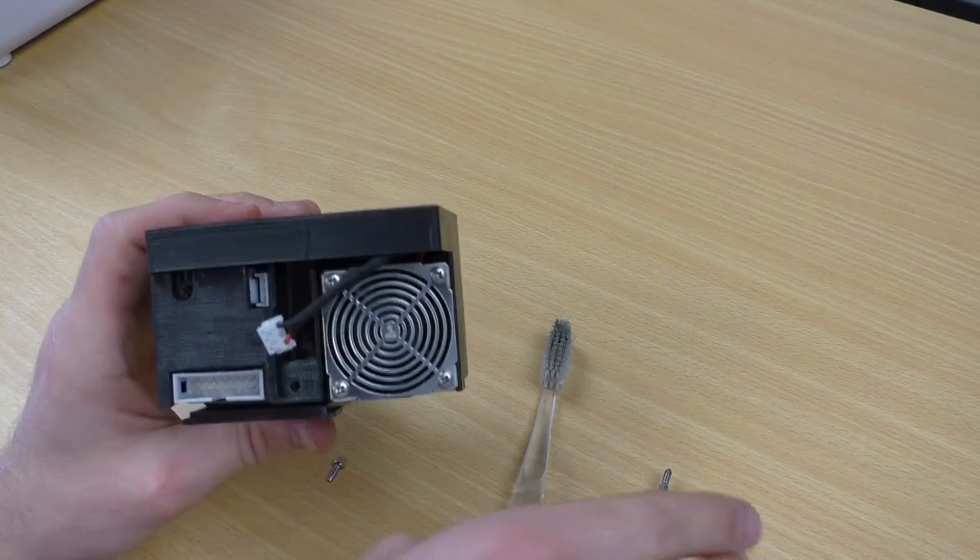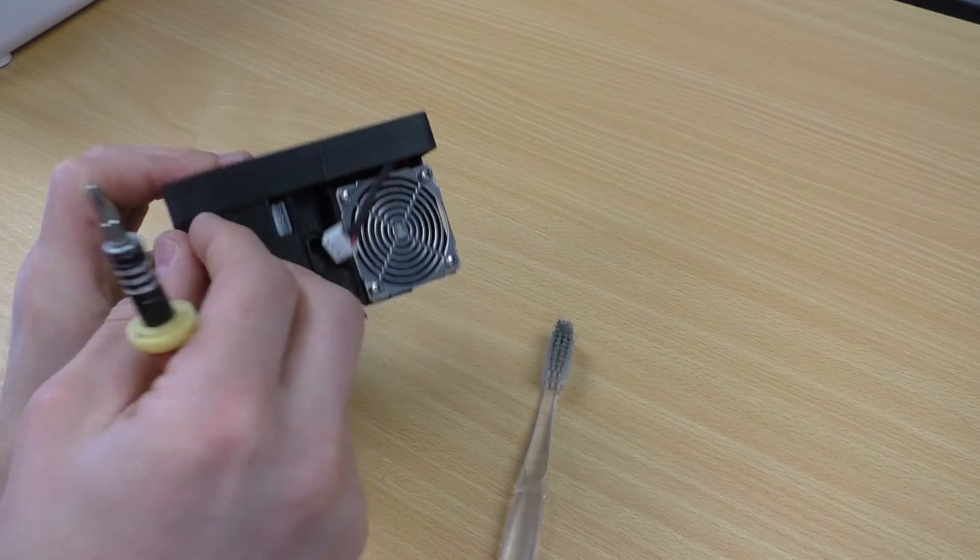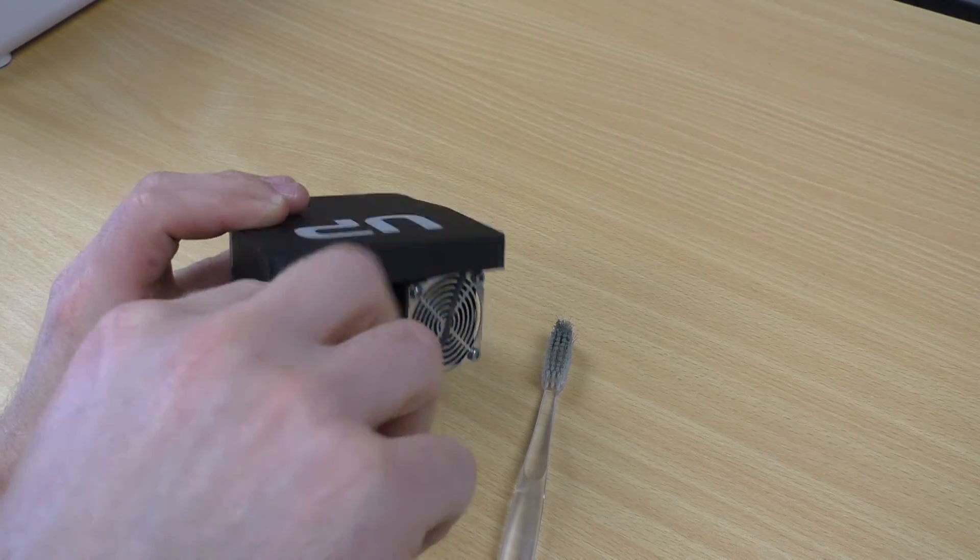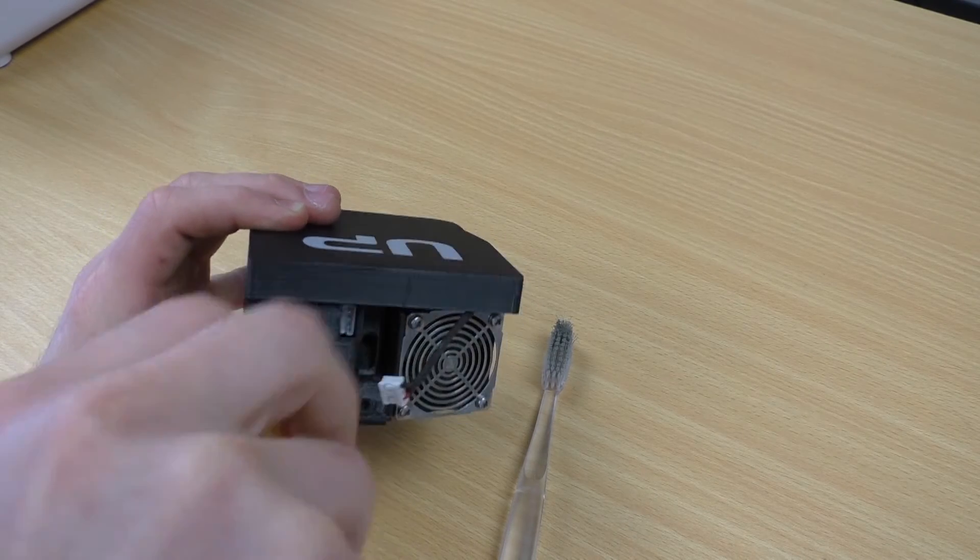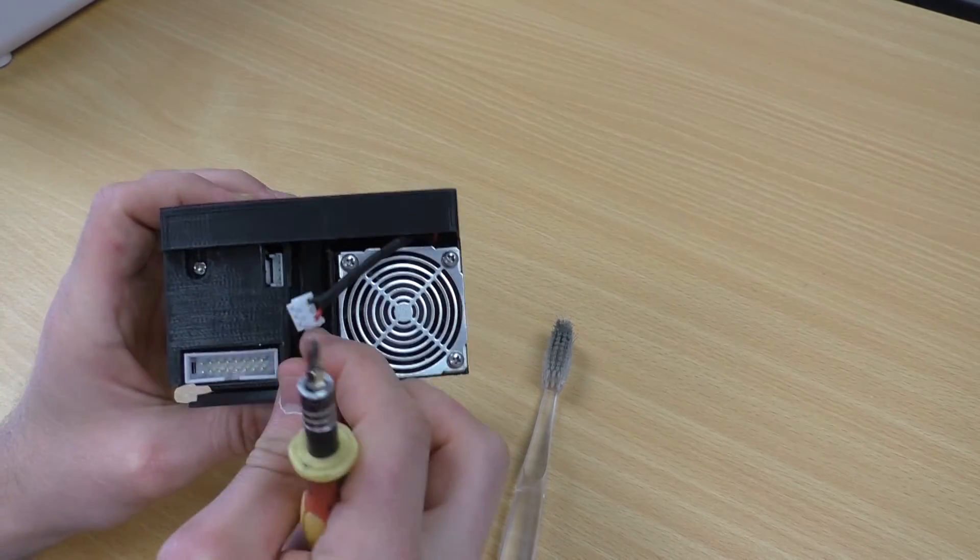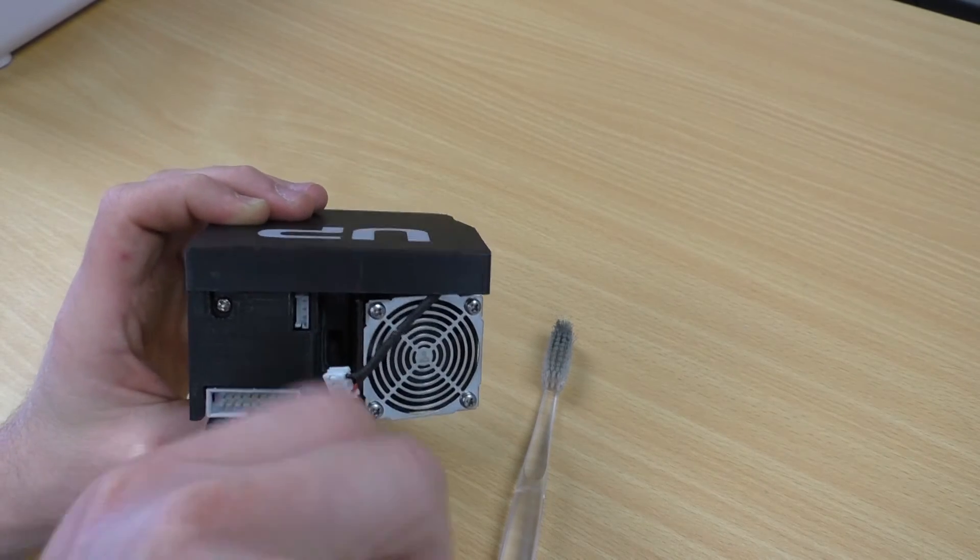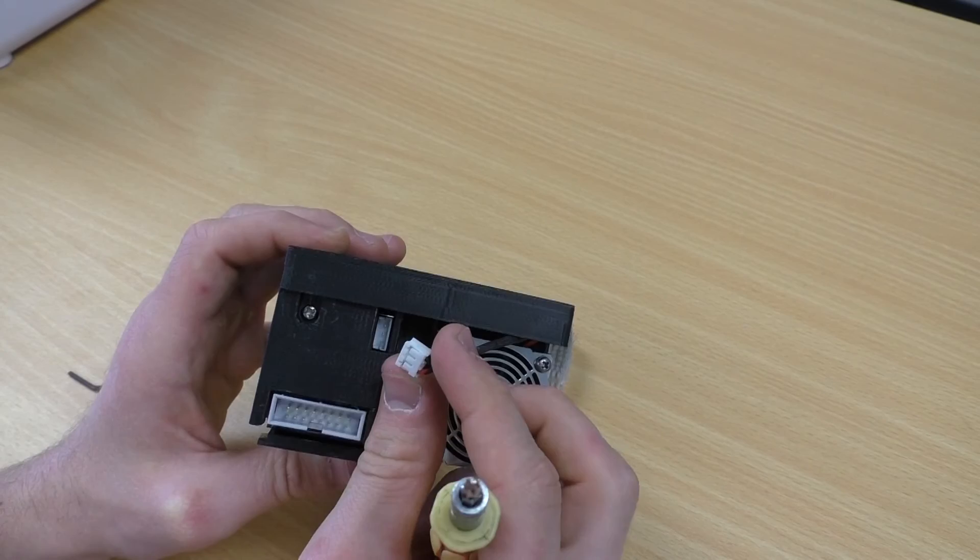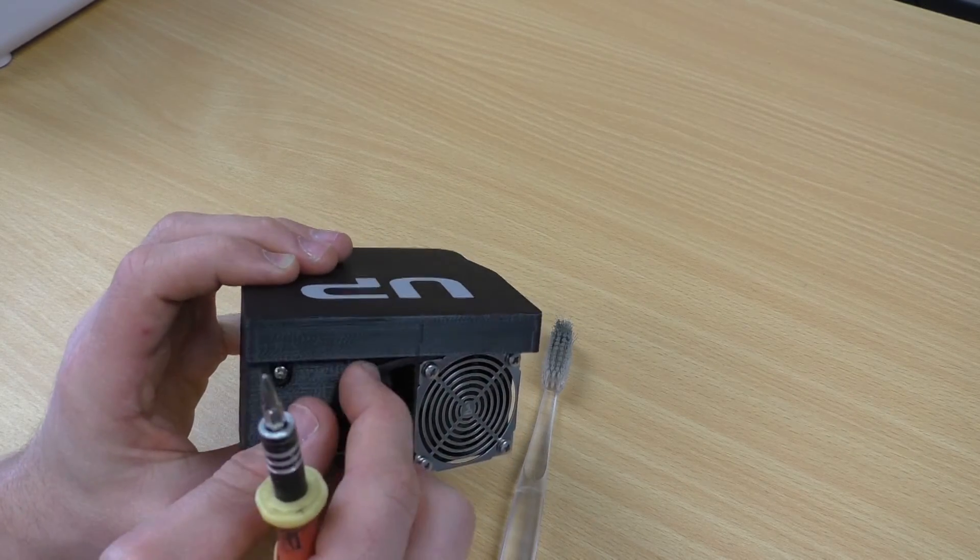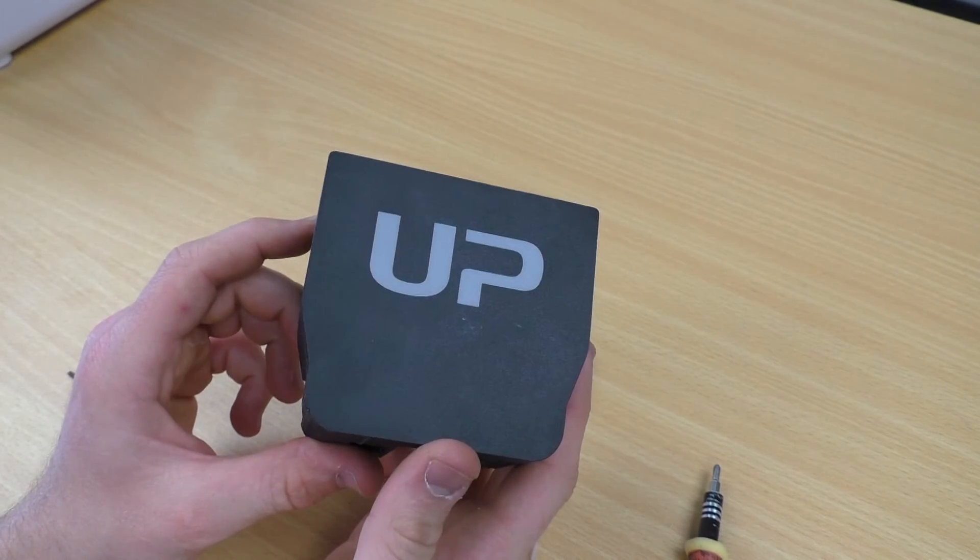On top, we'll put our screws back in. There we go. One more screw. And then once we've got these screws in, then we can plug the fan back into its plug. There we go. Drive gear is clean. Printhead's ready to go back in the printer, ready to continue printing.